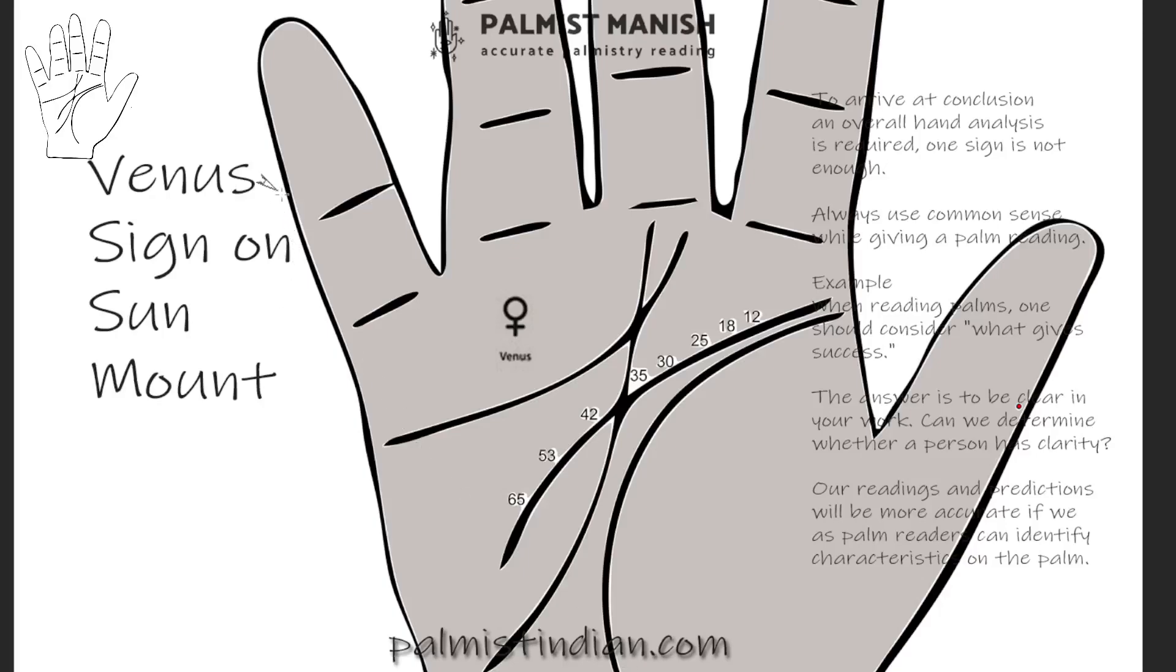What is the meaning of Venus sign? This is a Venus sign on the mount of sun. First, I would be telling you what the book says.